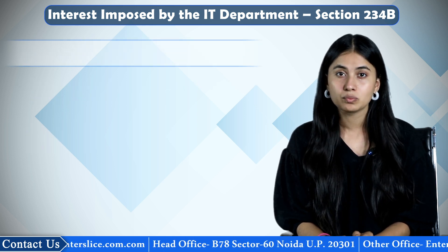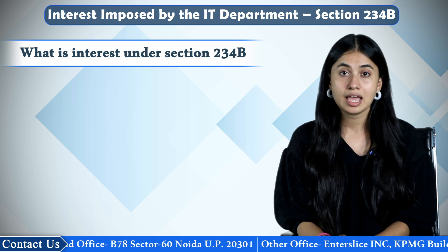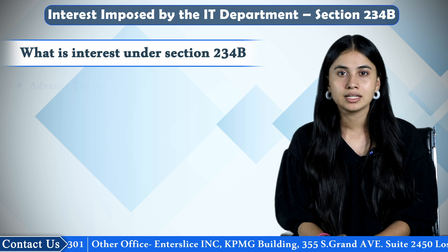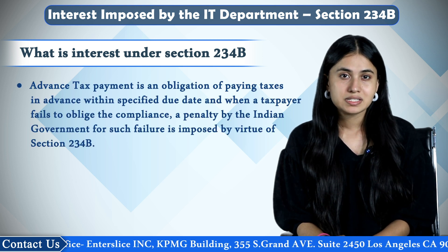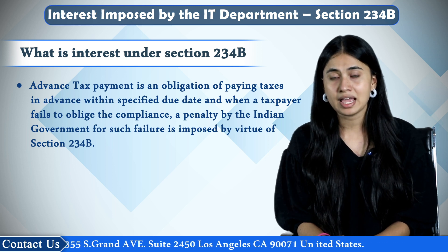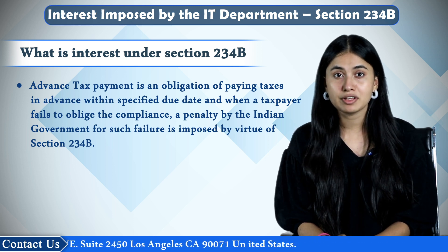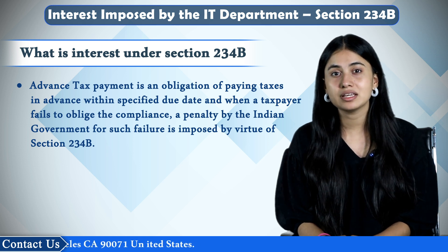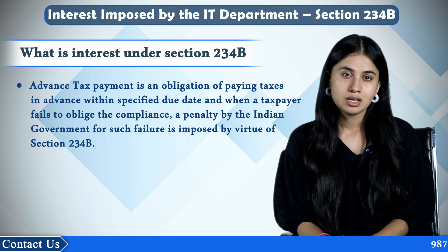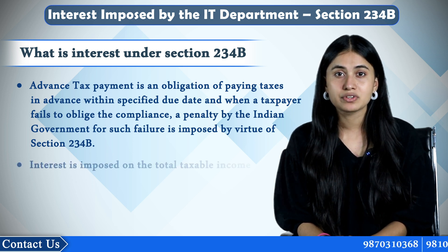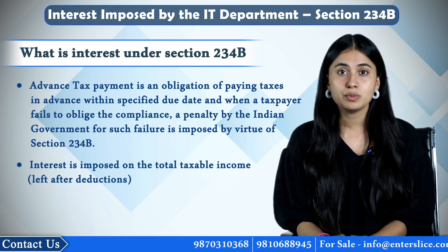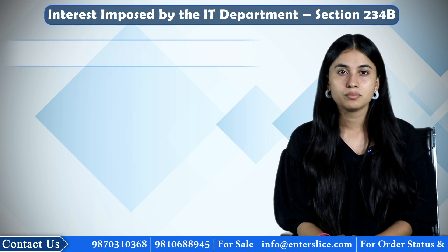Now the question comes: what is interest under Section 234B and how is it different from interest under Section 234A? Advance tax payment is an obligation of paying taxes in advance within a specified due date. When you as a taxpayer fail to oblige the compliance, a penalty by the Indian government is imposed by virtue of Section 234B. According to this section, interest is imposed on the total taxable income which is left after deductions, which is now paid along with the taxes.